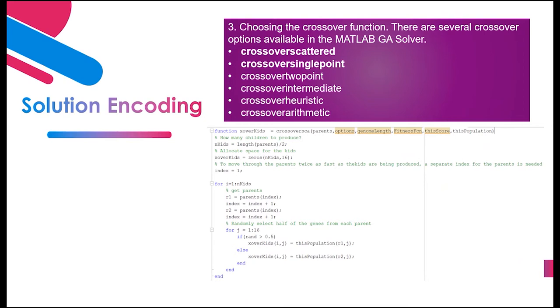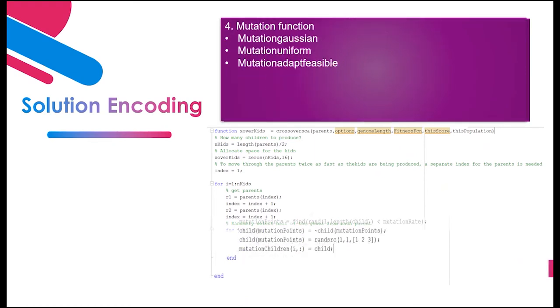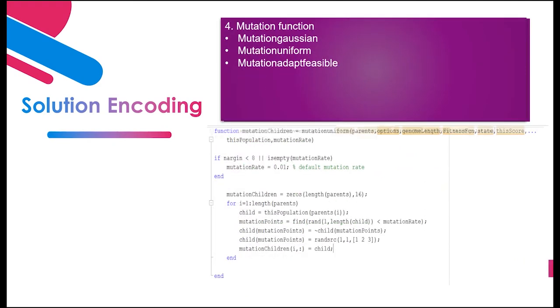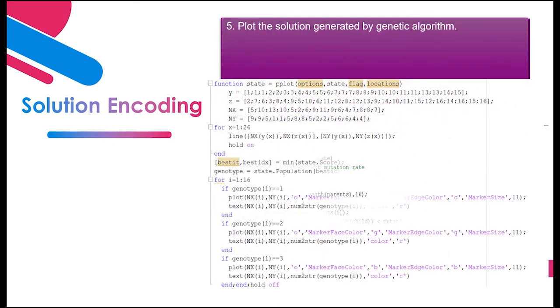There are several crossover operators available in MATLAB. Crossover scattered and crossover single point will be used in this project for comparison purposes. Mutation uniform operator is used in this project. Plot function is generated to plot the best chromosome solution. Three colors are assigned to the respective gene values.